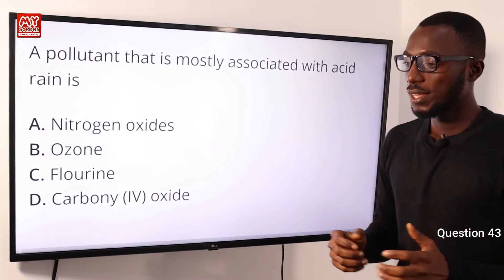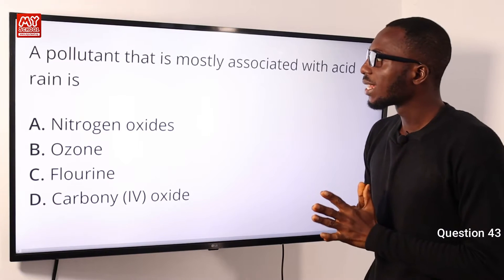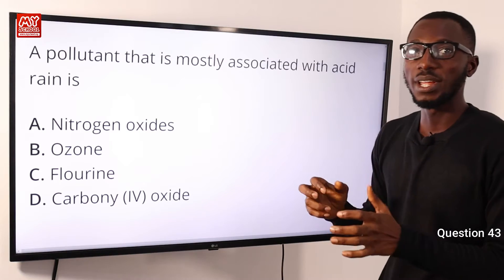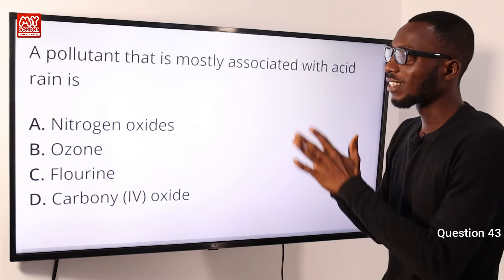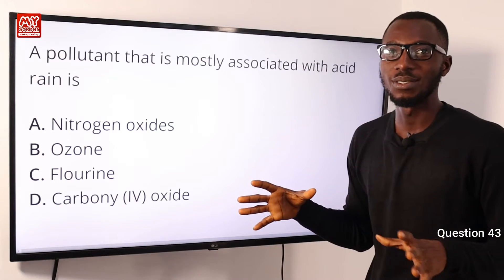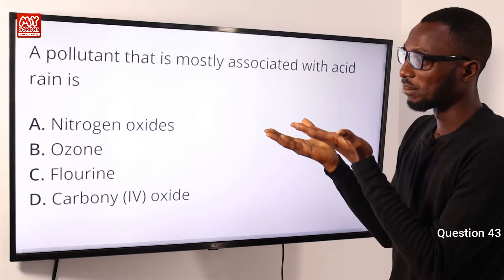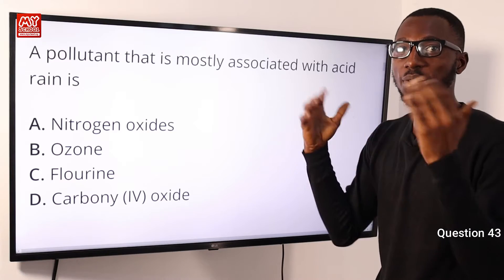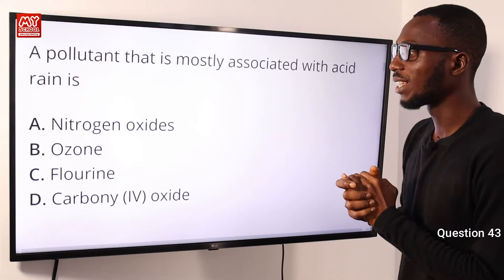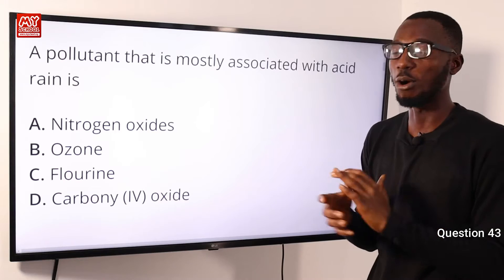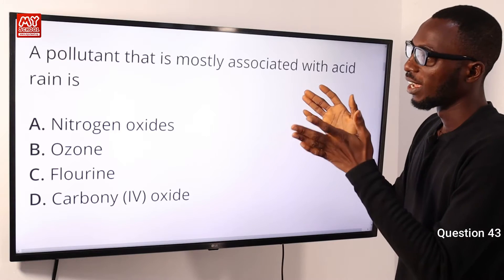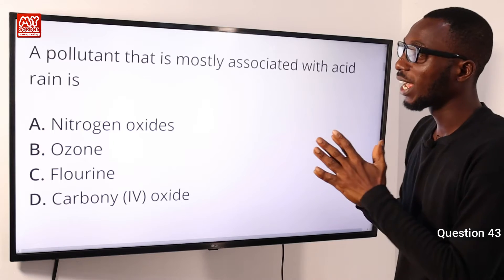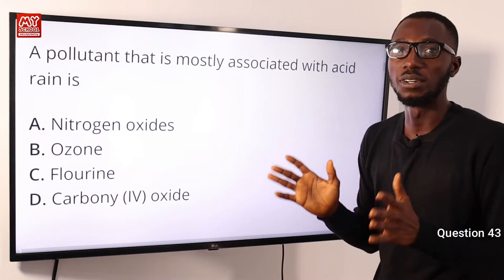Question 43: A pollutant that is mostly associated with acid rain is nitrogen oxide. This is when nitrogen oxide and sulfur dioxide are released into the atmosphere due to the activities of man. So going by the options given, the correct option here is option A.